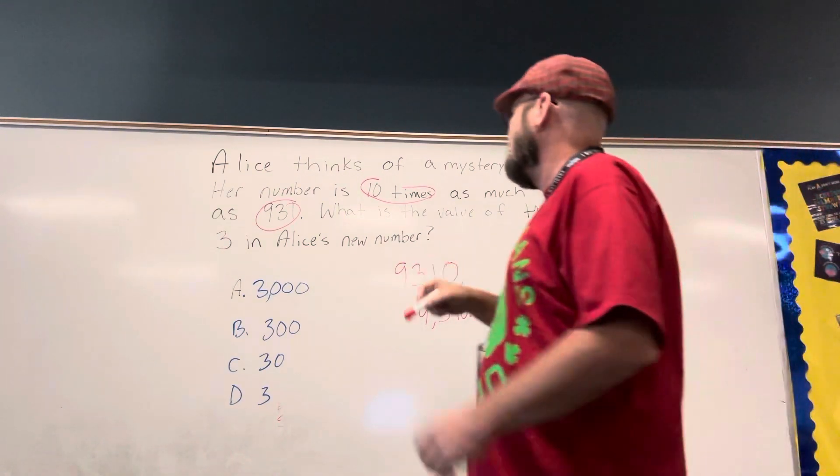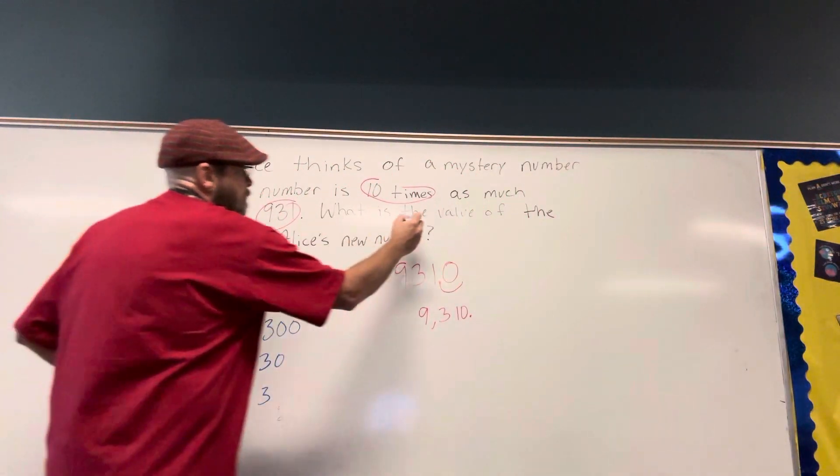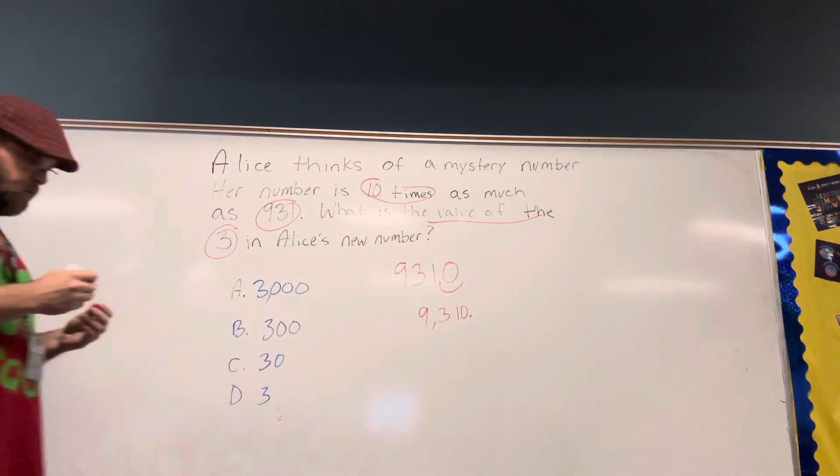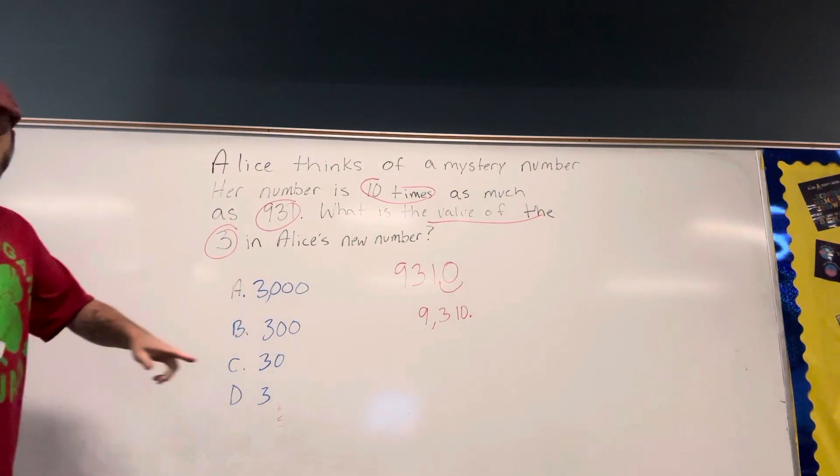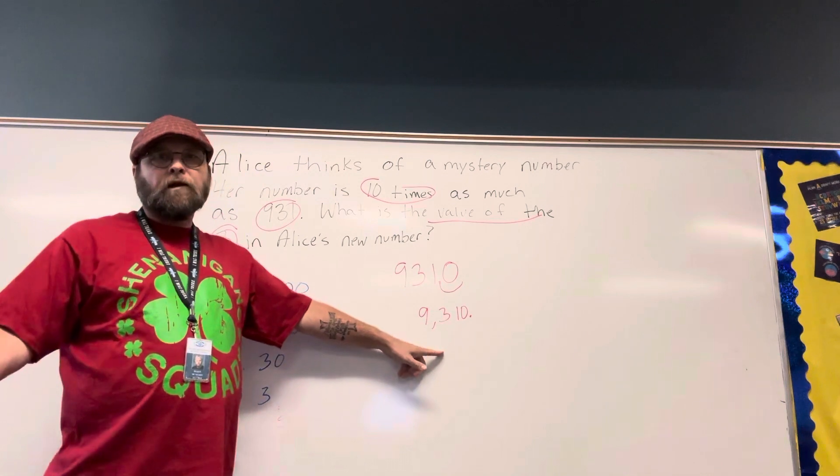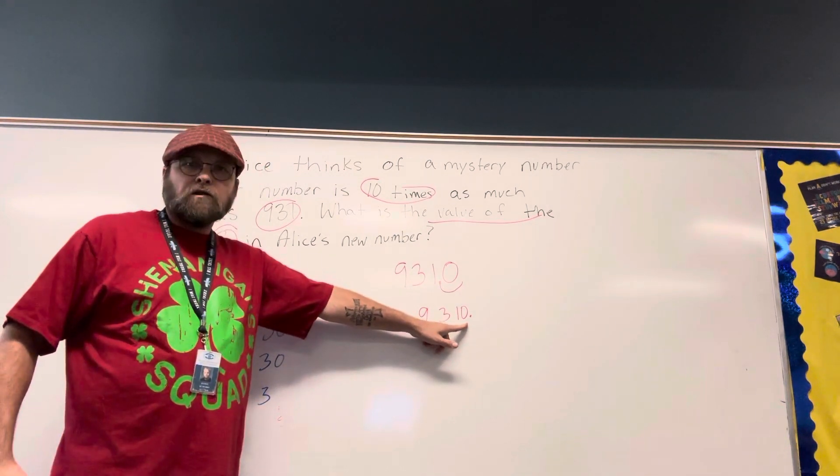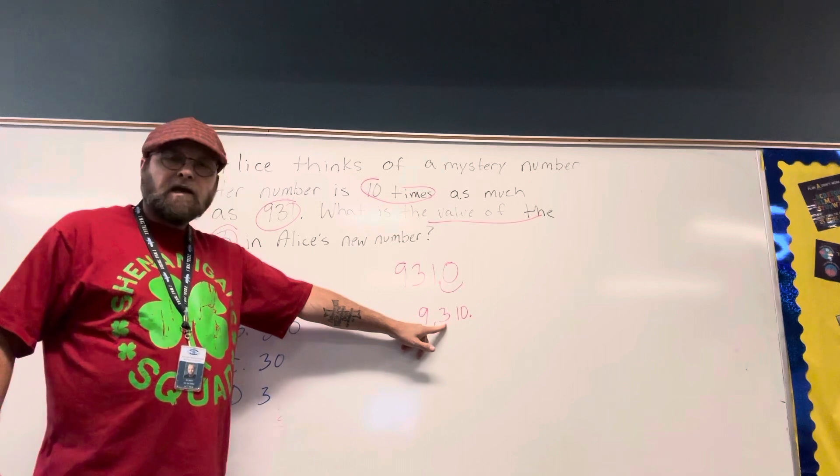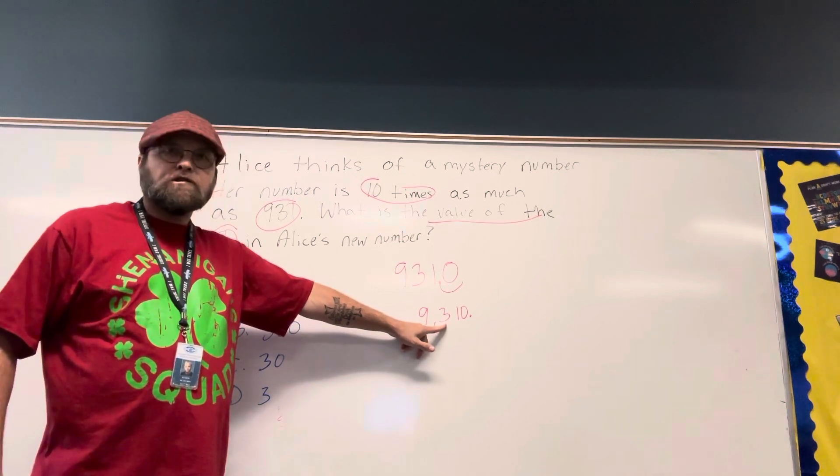Now, the question asks the value of the three. The value of the three. So I go and look at my number. I have to know my place values here. The zero's in the one's place. The one is in the ten's place. And the three is in the hundred's place.